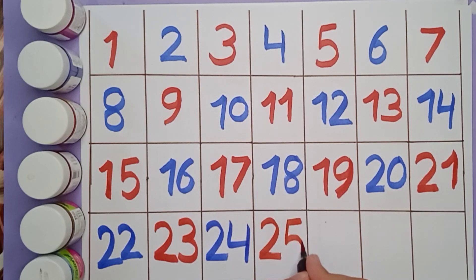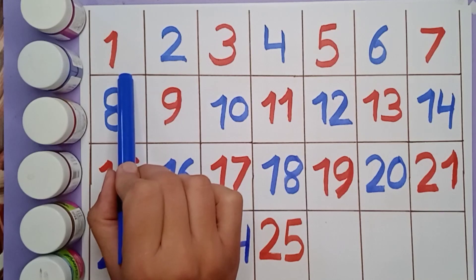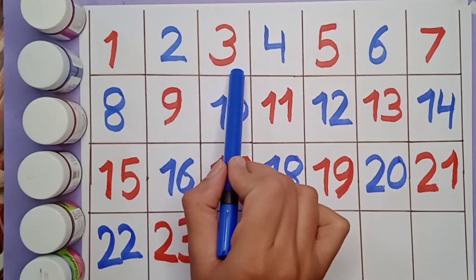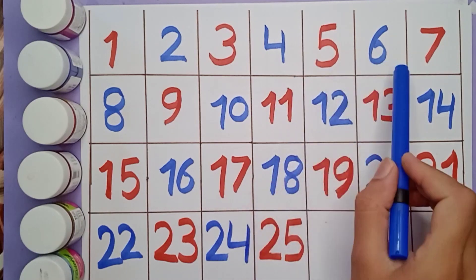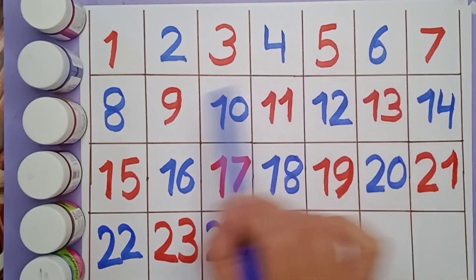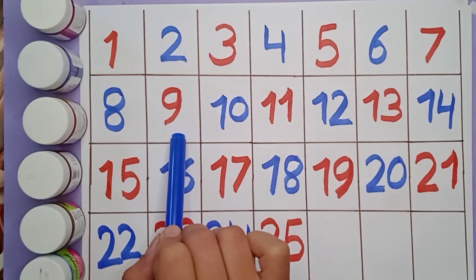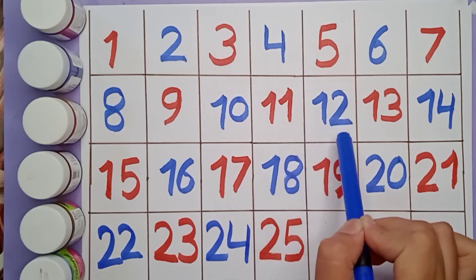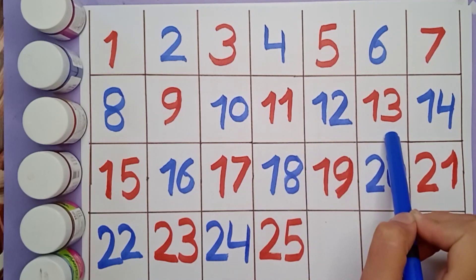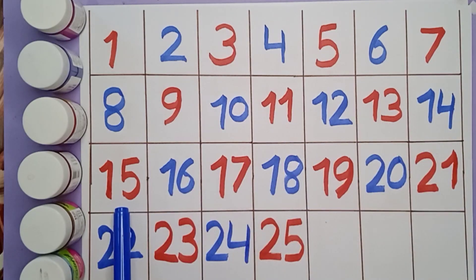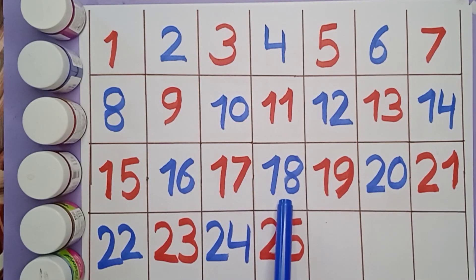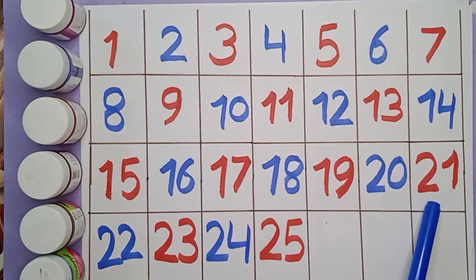Twenty-five. Let's start reading. 1, 2, 3, 4, 5, 6, 7, 8, 9, 10, 11, 12, 13, 14, 15, 16, 17, 18, 19, 20, 21, 22, 23, 24, 25.